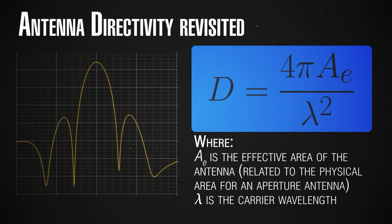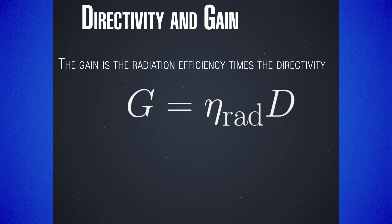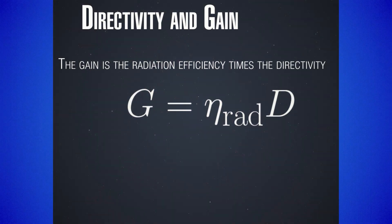An important distinction to make is between directivity and gain. The gain of an antenna is not just the directivity, but the directivity times the radiation efficiency. Any interface between confined waves and free propagating waves will have some losses — you cannot perfectly transmit from a waveguide. We account for these losses with η_rad, the radiation efficiency, a coefficient between 0 and 1 which tells us what part of the directivity actually turns into the gain. With perfect efficiency of 1, gain and directivity would be the same, but in reality the gain is slightly less than the directivity.